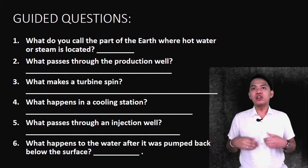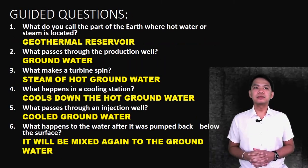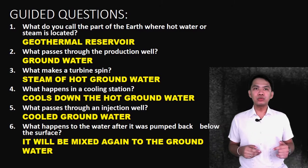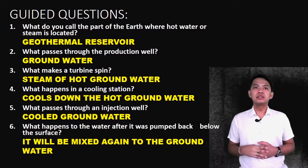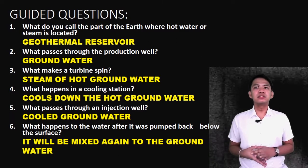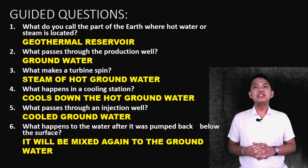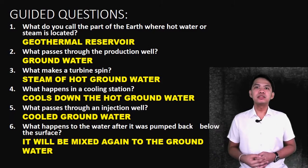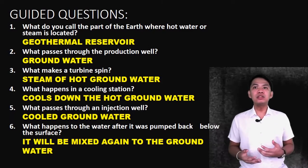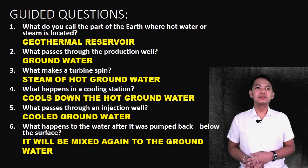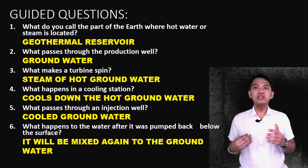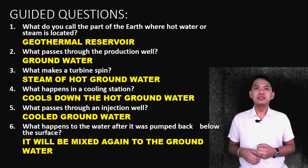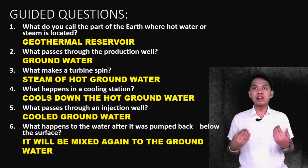Let's check if your answers are correct. In number one, the correct answer is geothermal reservoir. Number two, the answer is groundwater. Number three, the correct answer is steam of hot groundwater. Number four, the correct answer is cools down the hot groundwater. Five, cool groundwater. Number six, the answer is it will be mixed again to the groundwater.